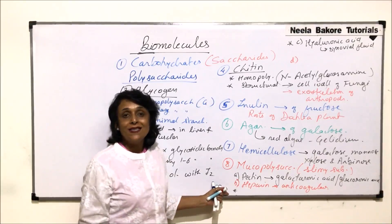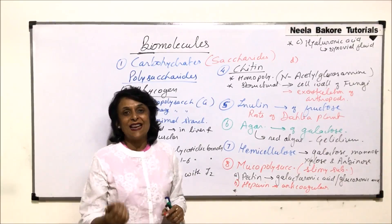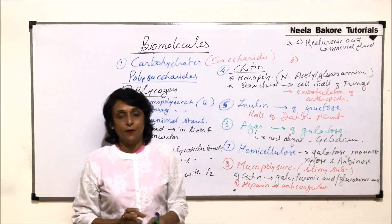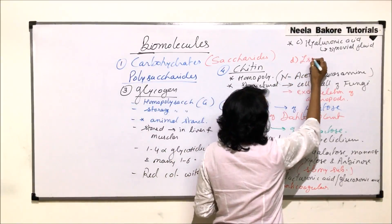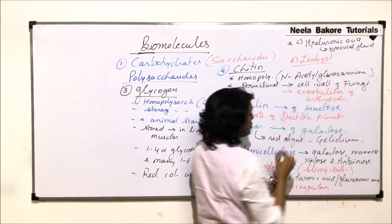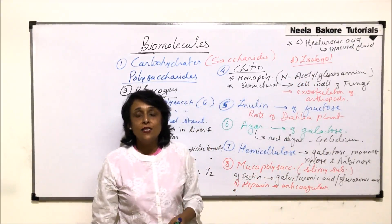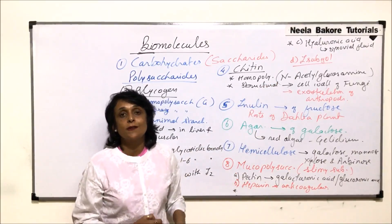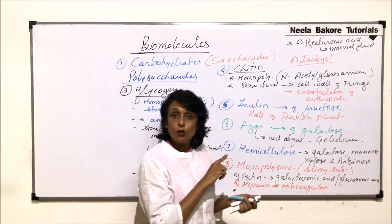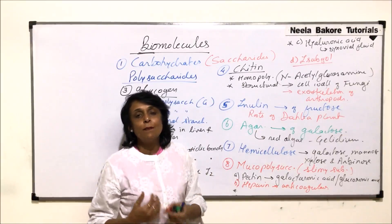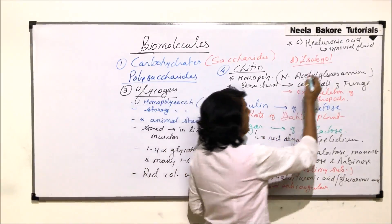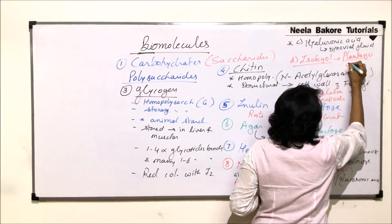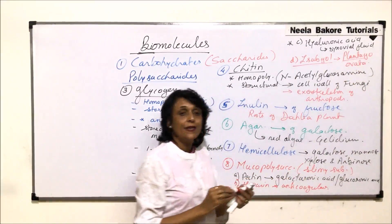One more mucopolysaccharide extracted from a plant and commonly taken by older people is isabgol. Isabgol is normally taken after dinner to reduce the chances of constipation. It helps peristalsis take place properly and is extracted from the plant Plantago ovata.